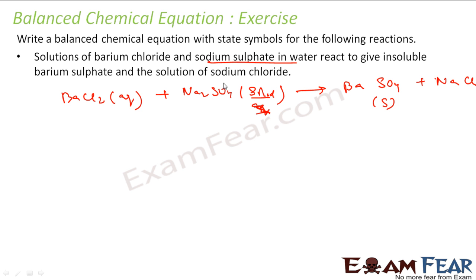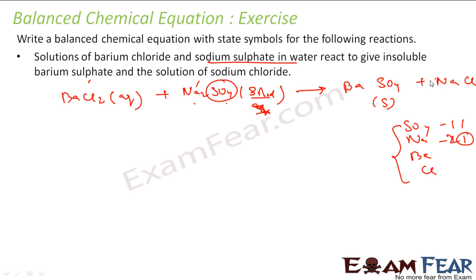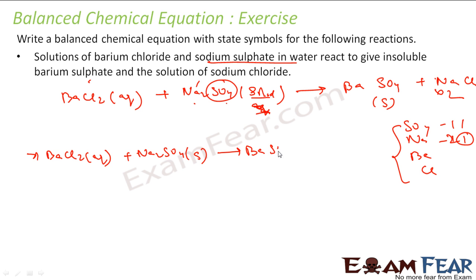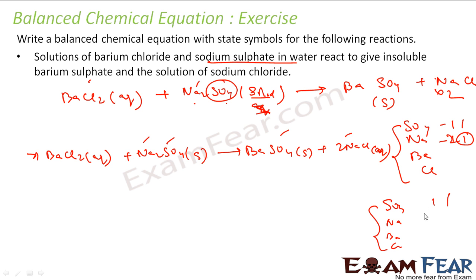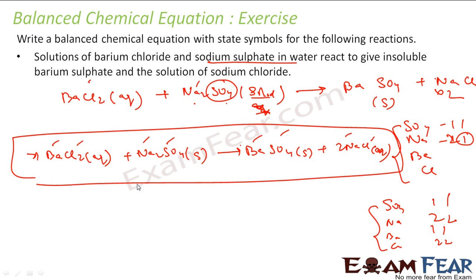This is an unbalanced equation, so let us balance it. We see that SO₄ is there — first priority. Then sodium and barium, then chlorine. SO₄: 1 here and 1 here — balanced. Sodium: 2 here and 1 here — not balanced, so we multiply by 2. The equation becomes: BaCl₂(aq) plus Na₂SO₄(s) gives BaSO₄(s) plus 2NaCl(aq). Now verify: sulfate 1 and 1, sodium 2 and 2, barium 1 and 1, chlorine 2 and 2 — all balanced. This is my balanced chemical equation.